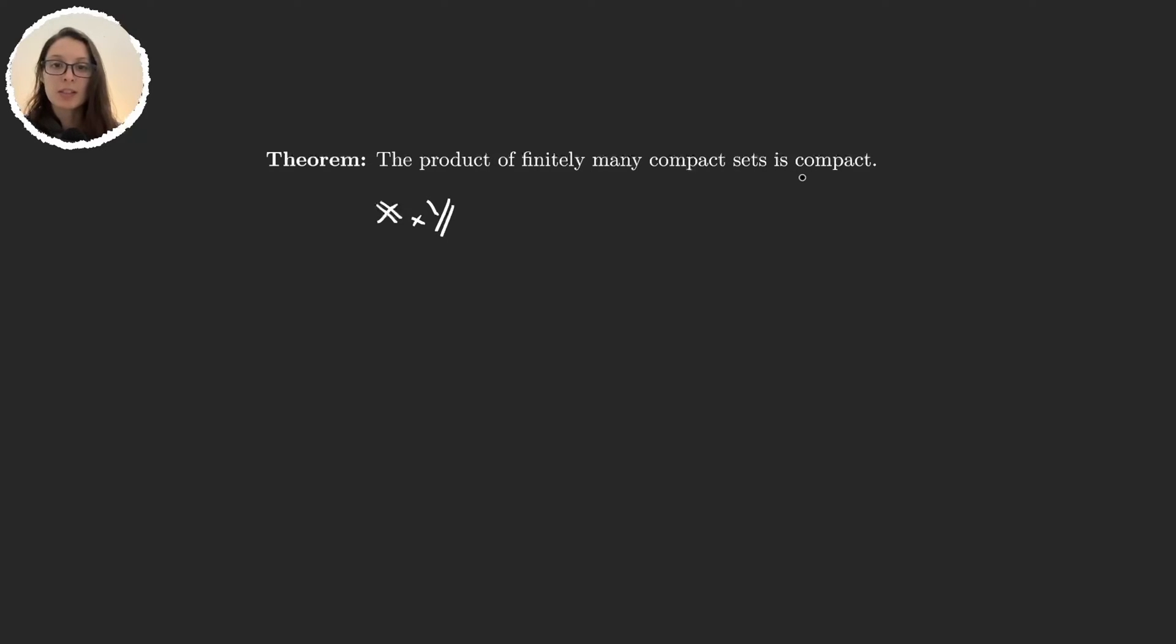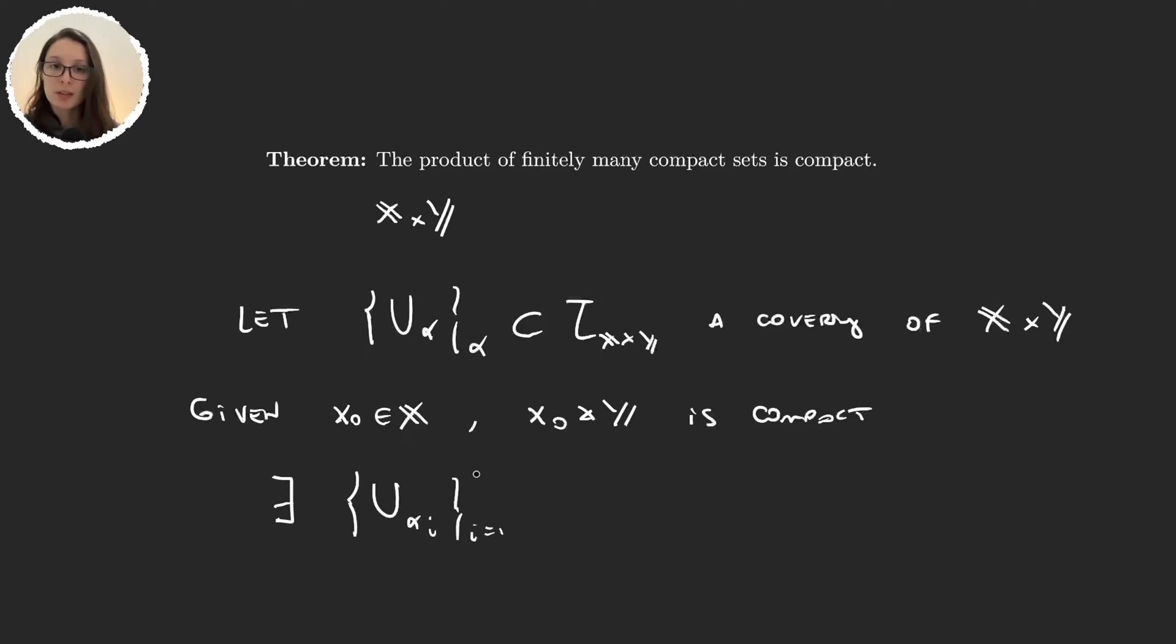we have to start by taking any covering of the product and finding a subcovering finite of that set. So we will take Uα in the product topology, a covering of X times Y, and given x₀ in X, we know that x₀ times Y is compact, and so there will exist a finite amount of these sets that will cover x₀ times Y.